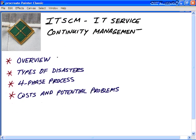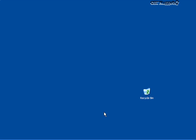In this second-to-last nugget movie of the ITIL Version 3 series, we looked at four key topics: an overview of ITSCM; the different categories and types of disasters; the four-phase process of ITSCM in great detail; and some of the costs and potential issues with deploying and implementing an ITSCM solution. I hope this CBT nugget has been informative for you. We'll see you in the final nugget of the ITIL series.